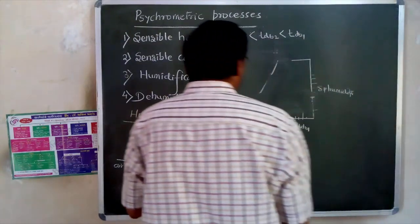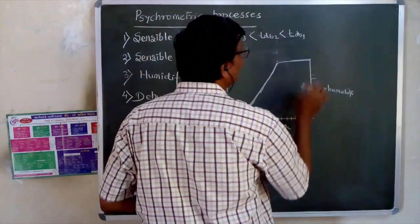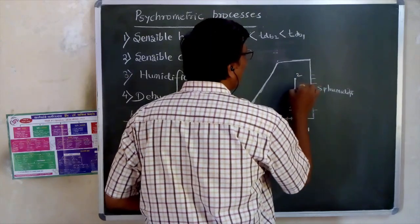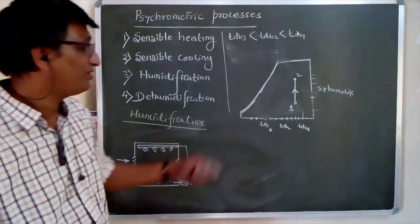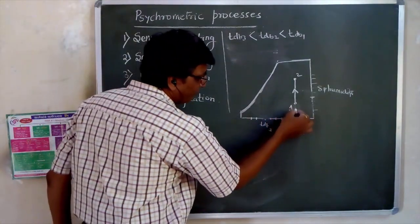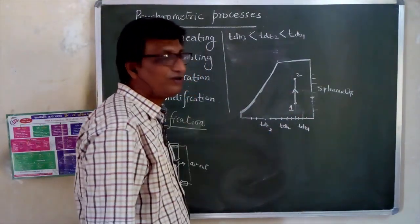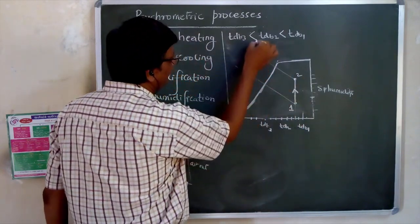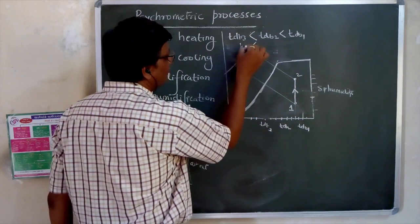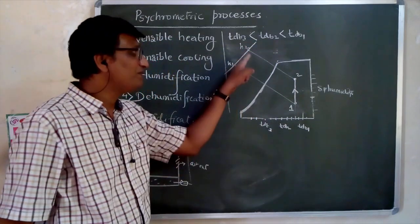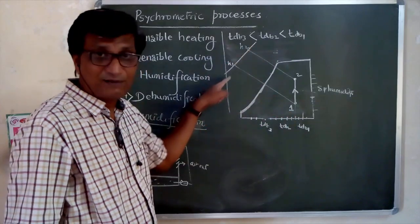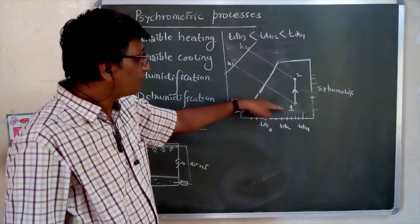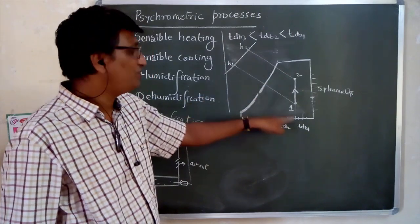On the psychrometric chart, humidification is represented as a vertical line. Point 1 is the initial state and point 2 is after humidification — both having the same dry bulb temperature, so temperature does not change. However, the enthalpies are changing: H2 is greater than H1. So in this process, you get no change in dry bulb temperature but an increase in water content and enthalpy. This is called humidification.